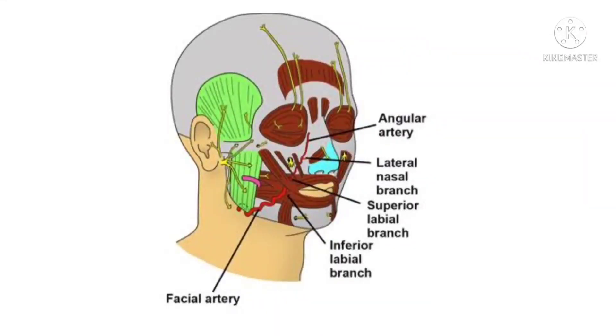The next pulse point is the facial artery. Due to its superficial course, the pulse of the facial artery is palpable at the antero-inferior angle of the masseter muscle against the bony surface of the mandible.